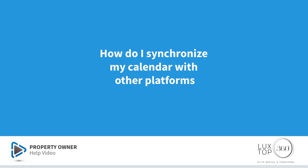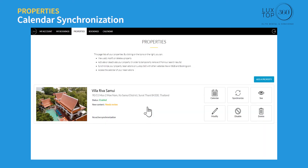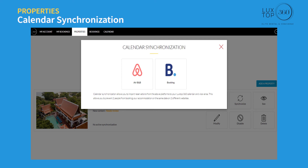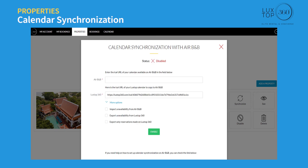How do I synchronize my calendar with other platforms? Log in and click on 'Properties.' Calendar synchronization prevents double bookings across different websites. Click on 'Synchronize.' You can import reservations from Airbnb and Booking.com to your luxtop360 calendar and vice versa — enter the iCal URL of your calendar from Airbnb. Additional options include importing unavailable dates from Airbnb, exporting unavailable dates from luxtop360, and exporting only reserved dates. Click the enable button to activate synchronization.